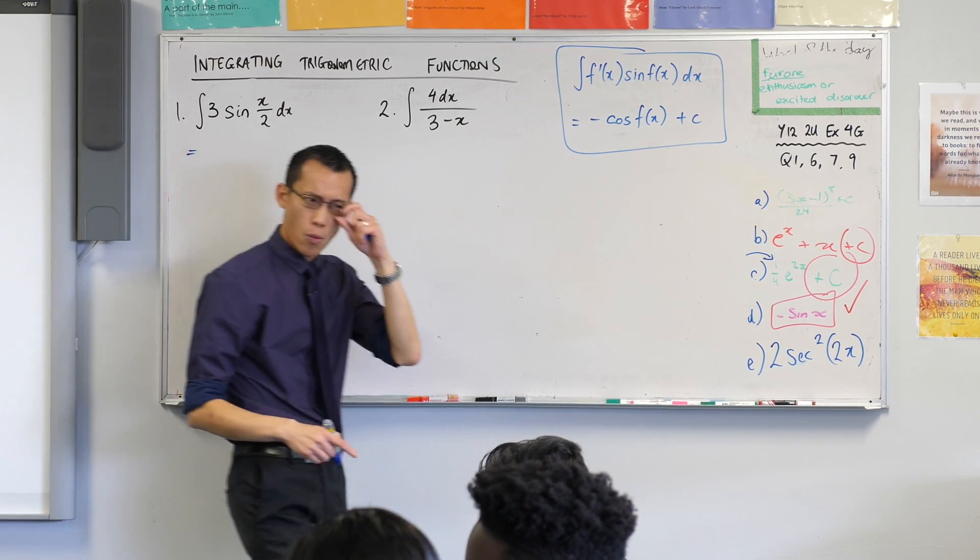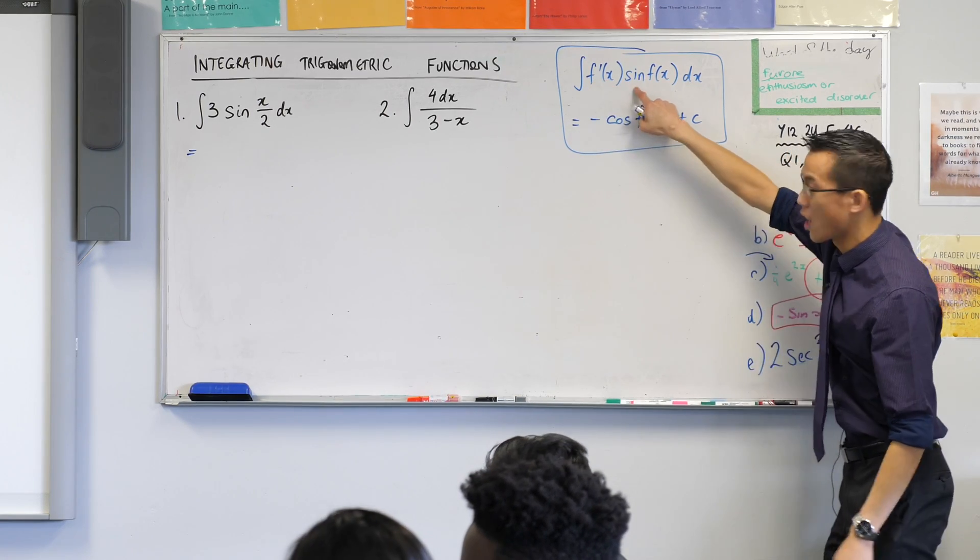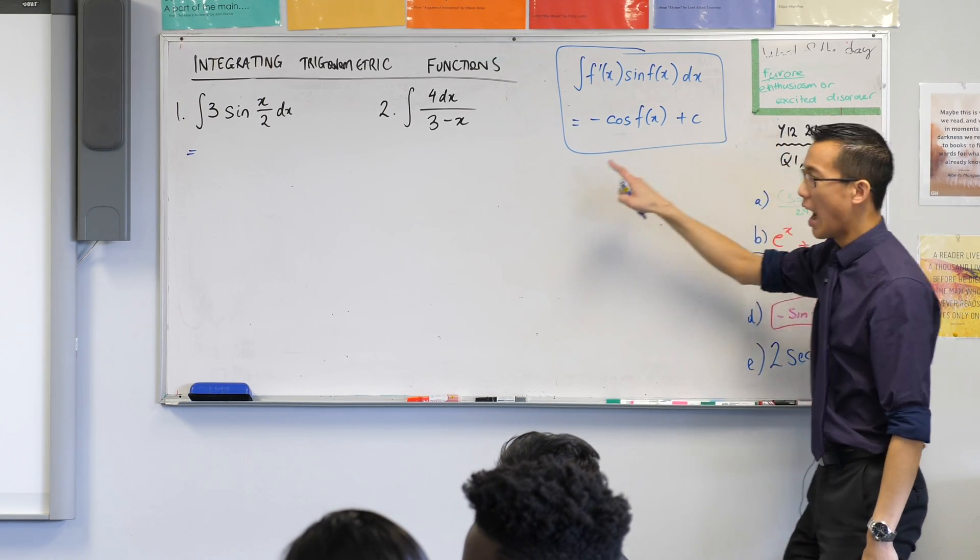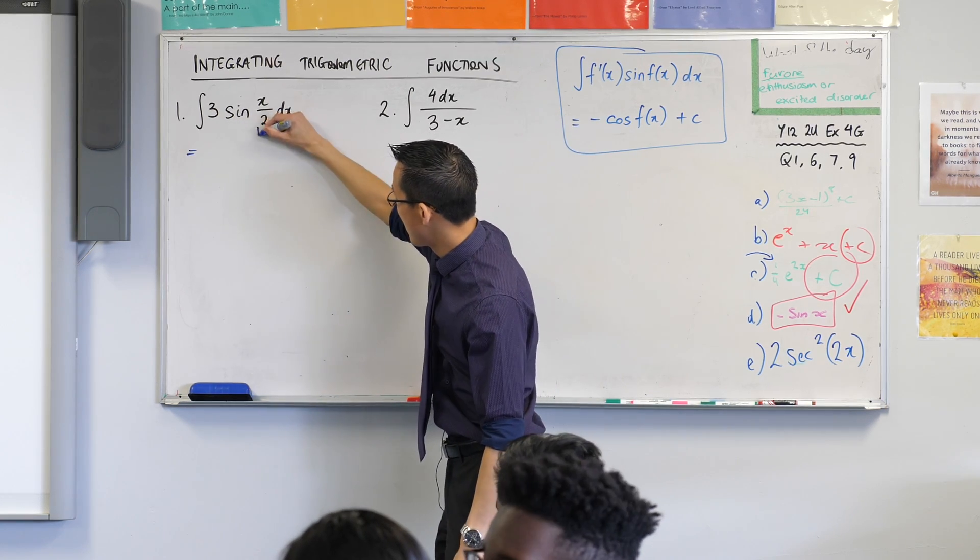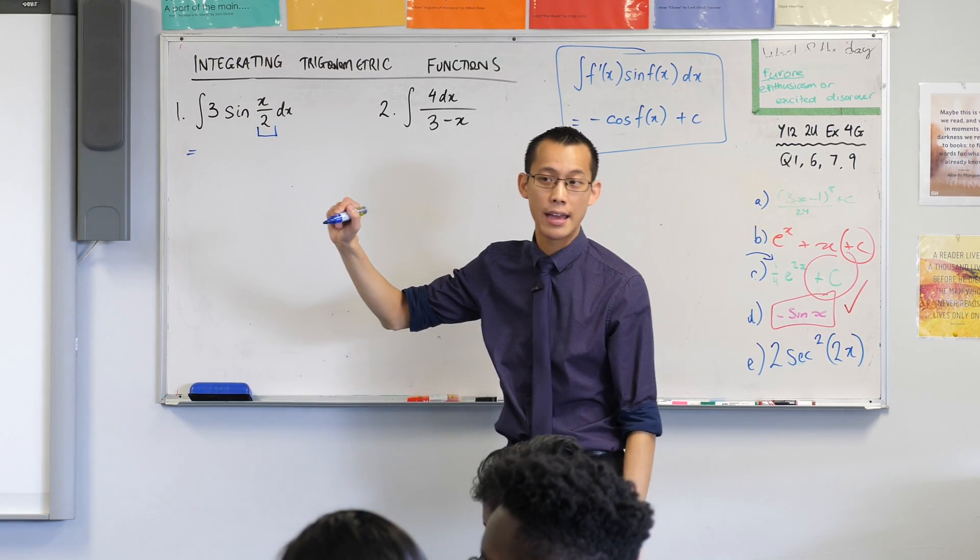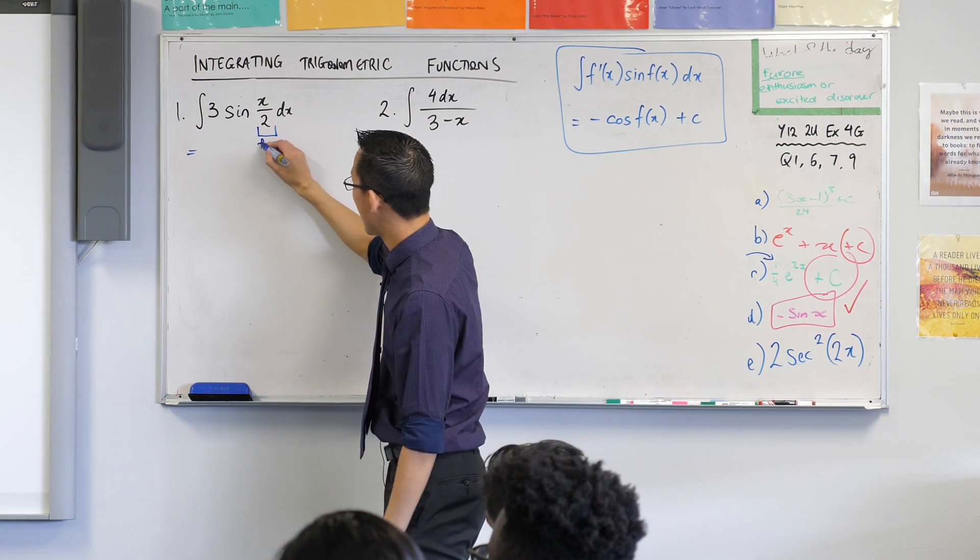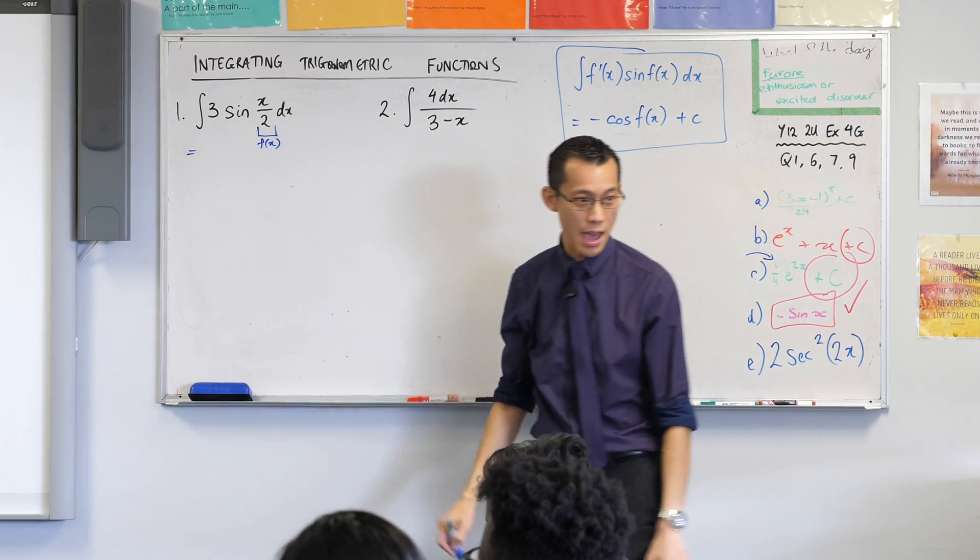If I can see that I want to get this in the form f dash sine of f of x, I'm actually pretty close to that, right? Here's my sine and then this guy here is my f of x. Do you see that? So I'm going to label that accordingly. That's my f of x.